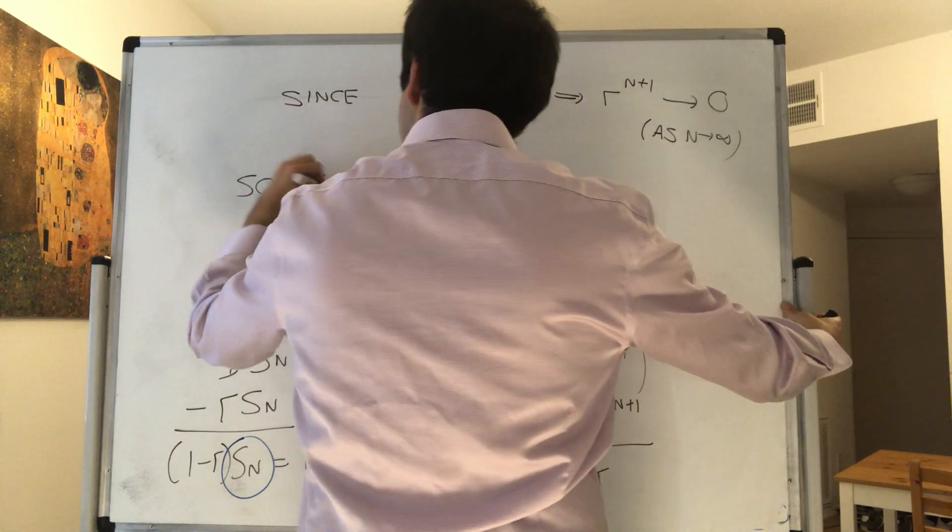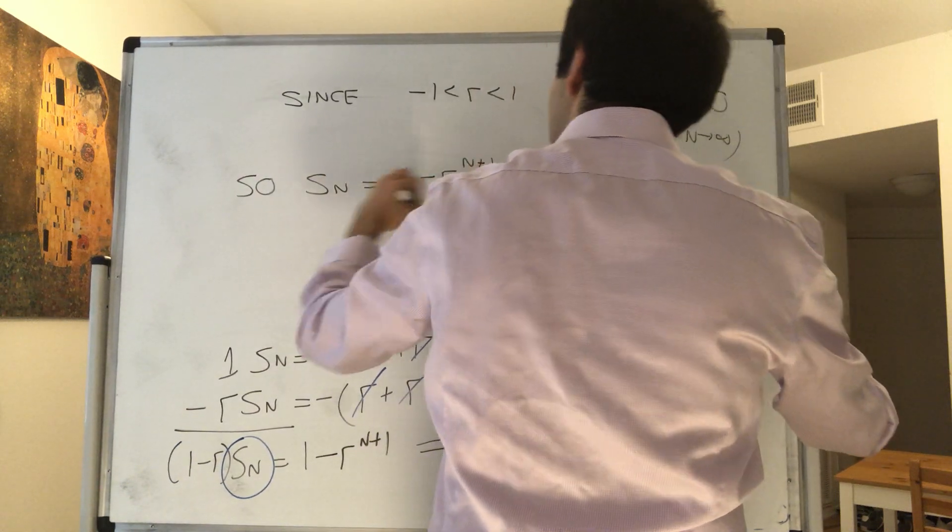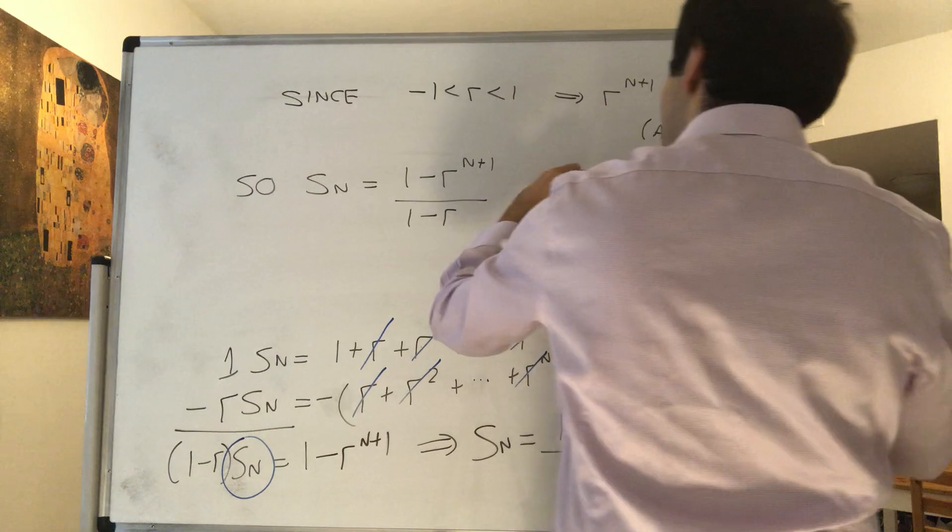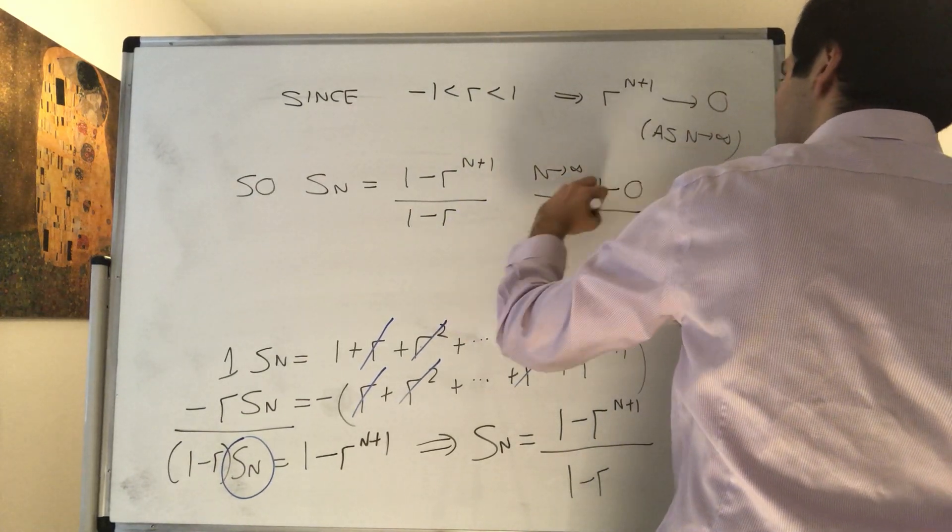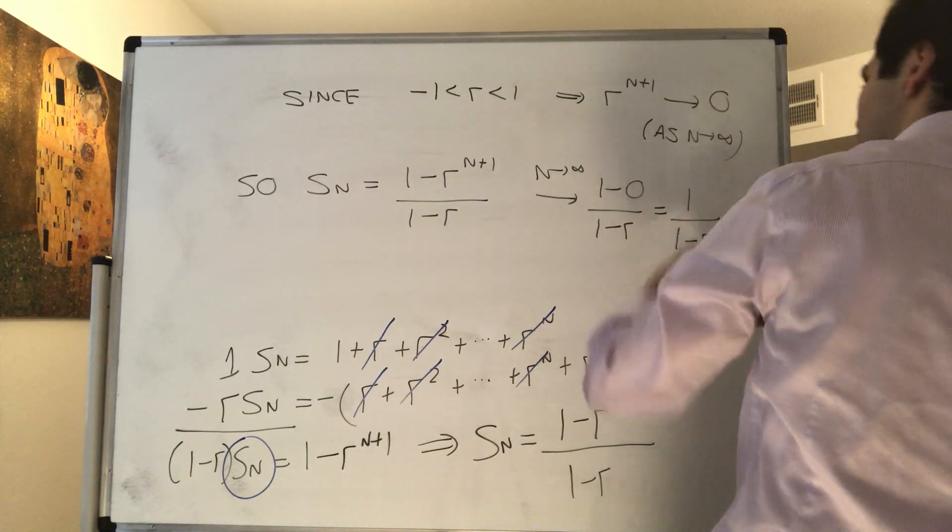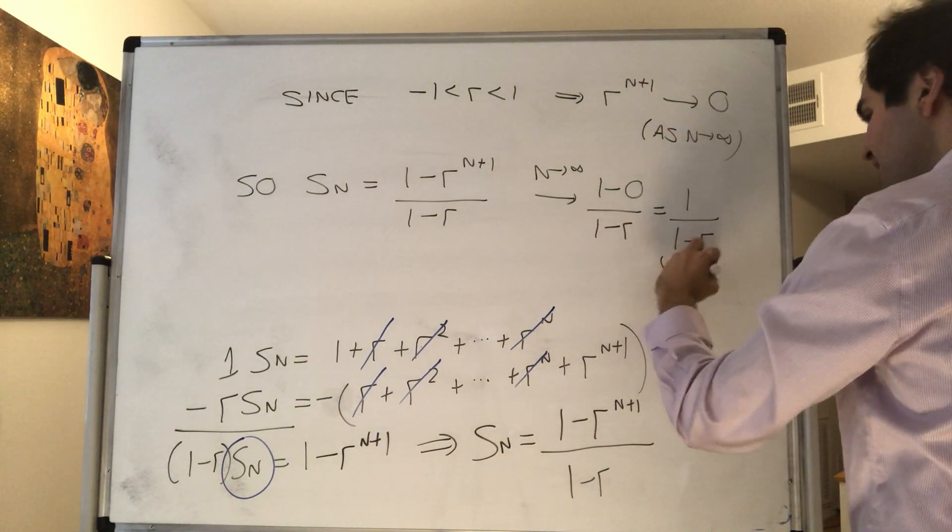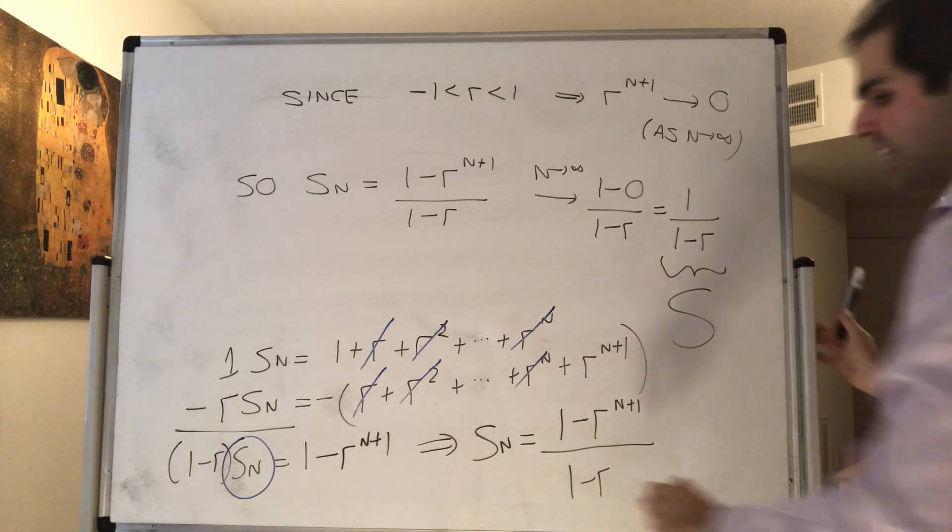So S_n, which is (1 minus r to the n plus 1) over (1 minus r), as n goes to infinity, that goes to (1 minus 0) over (1 minus r), which is 1 over (1 minus r). And this is the value of our series that we call capital S.